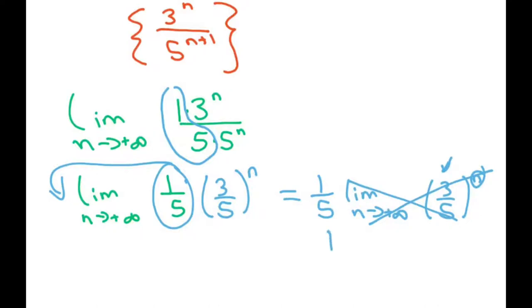That equals 0. So you have 1 fifth times 0, and that equals 0. And that's it. Thank you. Have a nice day. Bye-bye.